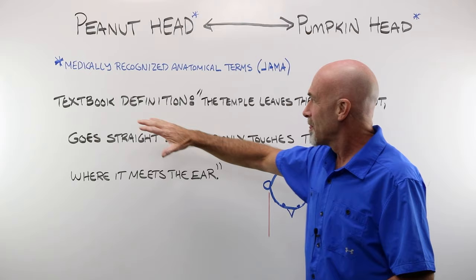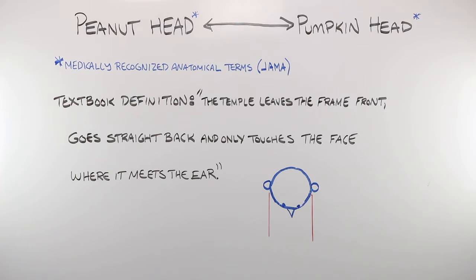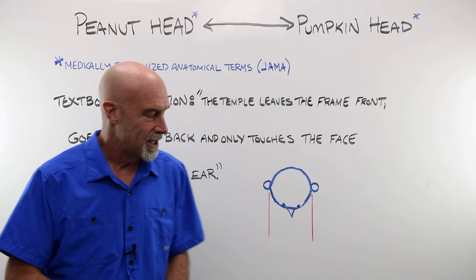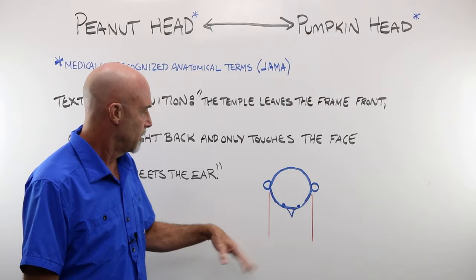The textbook definition for the proper width of a frame is this, and I'll get out of the way and read that. The temple leaves the frame front. It goes straight back and only touches the face where it meets the ear. Now, as old school textbooky definitions go, this is a really good one and certainly one that you may see pop up on exams and such. What does that mean? Well, just simply exactly that. If these are your temples, you want them going straight back from the frame front and touching just before the ear. Let's dig into that just a little bit more.